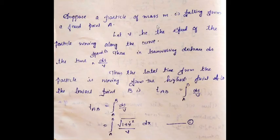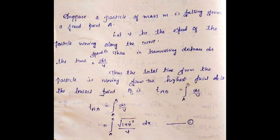Suppose a point of mass M slides from a fixed point A, where V is the speed of the particle moving along the curve. The traversed distance ds over time is equal to ds divided by velocity V. So the total time taken from the highest point A to the lowest point B is T_AB equals the integral from A to B of ds divided by V, which is the integral of root(1 + y_dot squared) dx divided by V.